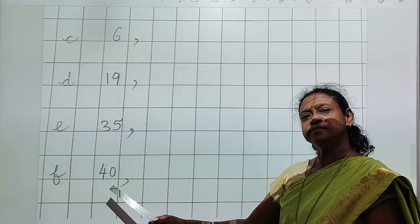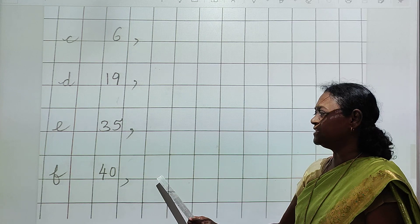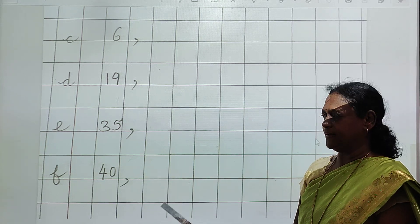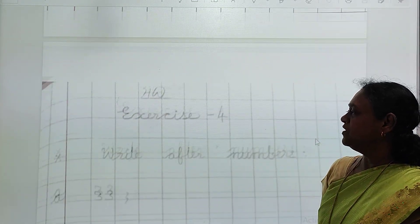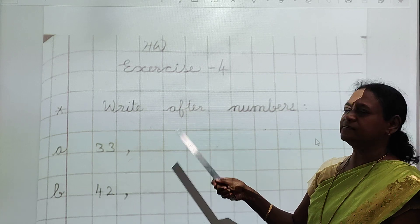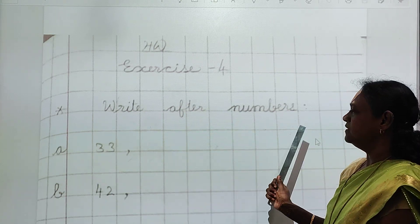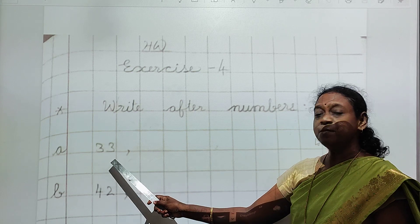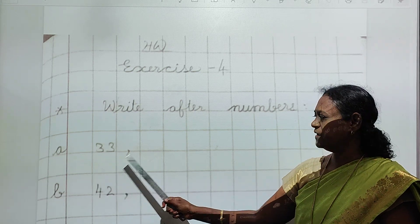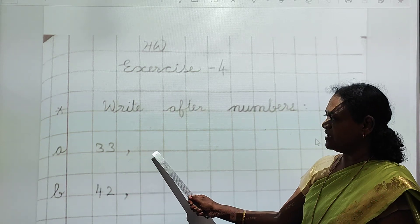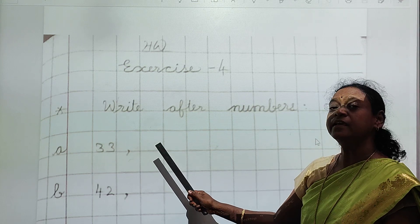Which number is this? 40. You will write here 41. Okay children? Now fourth page you have to do like this. Exercise 4. Write after numbers. Ye kya likha hai? 33. Comma lagaenge one box mein, phir yaha pe answer likhenge. 34.